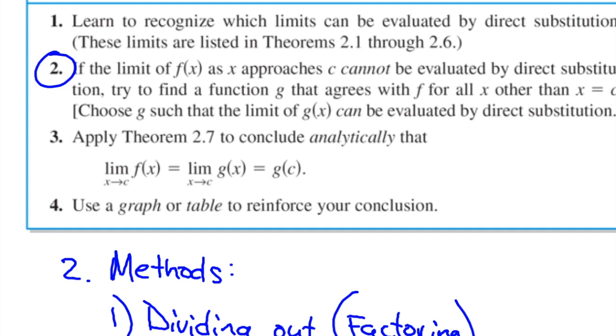And what we're going to do is choose g such that the limit of g(x) can be evaluated by direct substitution. Apply Theorem 2.7 to conclude analytically that the limit of f(x) as x approaches c equals the limit of g(x) as x approaches c, and then just use direct substitution. Then use a graph or table to reinforce your conclusion.